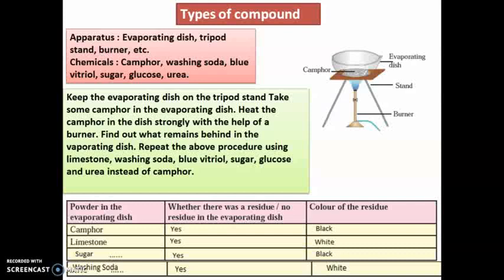The procedure is: one by one, we take the chemicals in the evaporating dish and heat it with the burner. After heating, we will study what remains in the evaporating dish and the color of the residue. Residue means leftover — what remains after heating. Based on the color of the residue, we will study the different types of compounds.